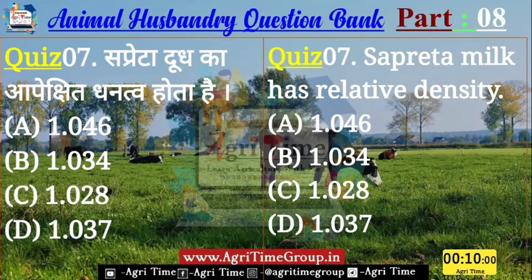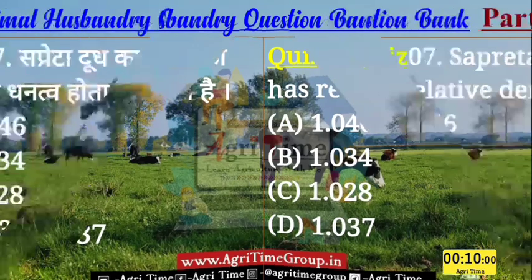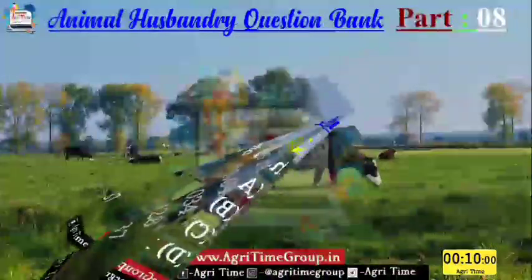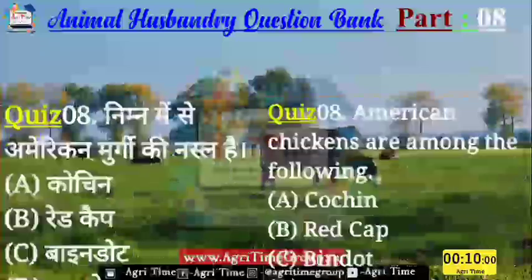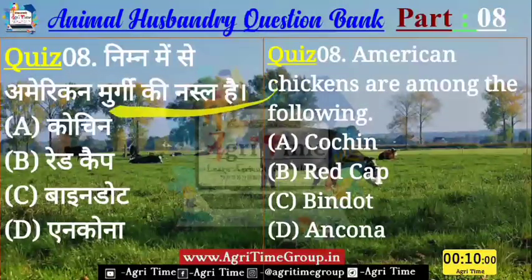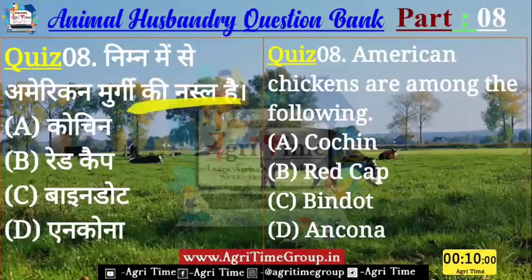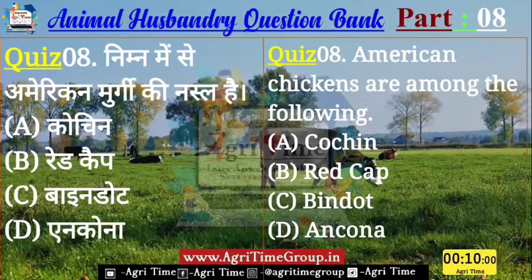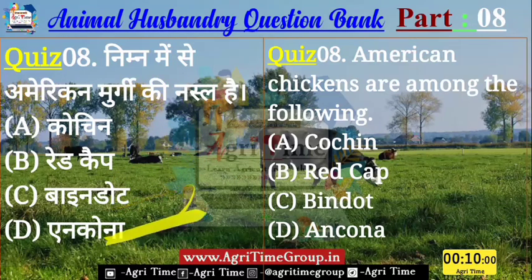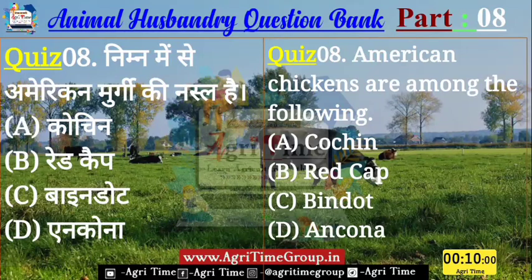Question number 8 — यह रहा आपके screen पर। निम्न में से अमेरिकन मुर्गी की नस्ल कौन सी है? Option में दिये हैं: Cochin, Red Cap, Wyandotte और Inca। तो बतलाईए — अमेरिकन मुर्गी की नस्ल इन options में से कौन सा है?